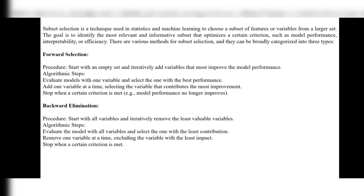The algorithm steps for forward selection: first, evaluate the model with one variable and select the one with the best performance. Then add one variable at a time, selecting the variable that contributes the most improvement. You check what performance you get by selecting each variable. Stop when a certain criterion is met — for example, when model performance no longer improves. If adding the next variable does not change the performance, you stop there.